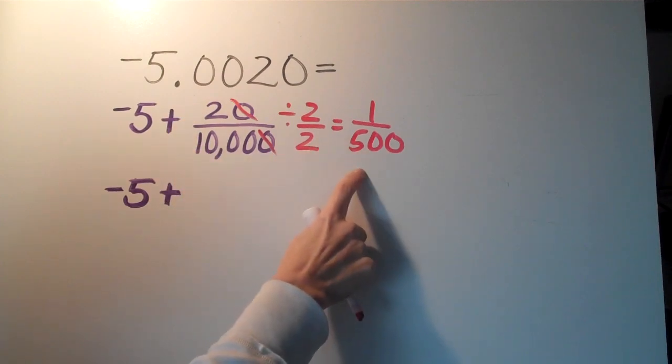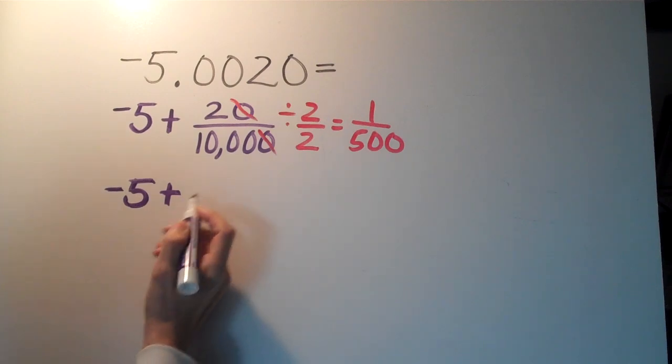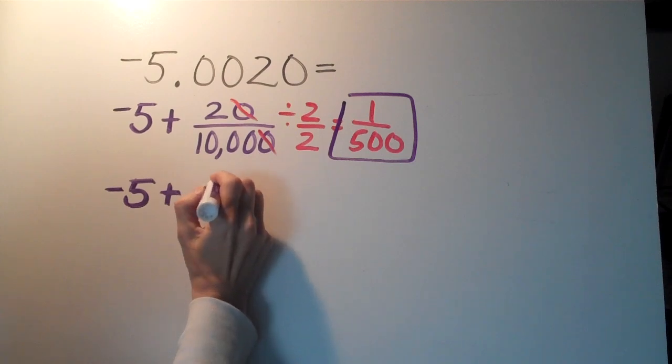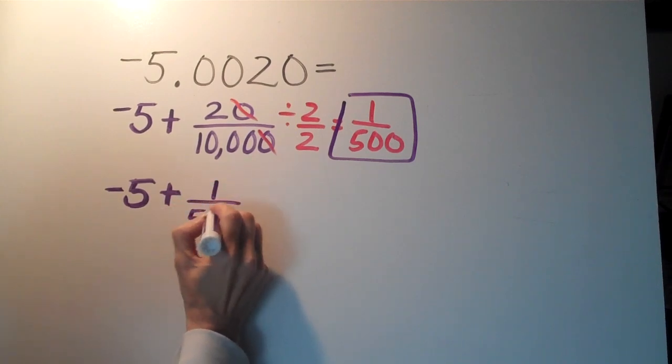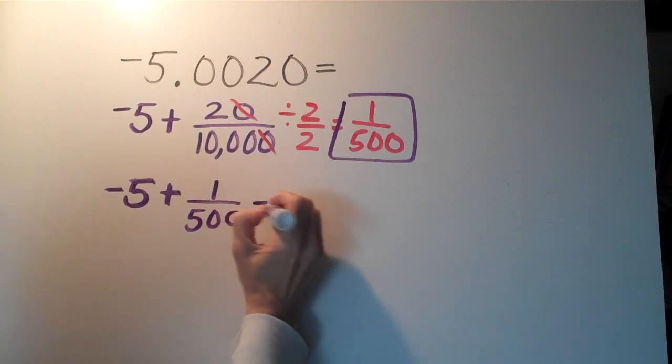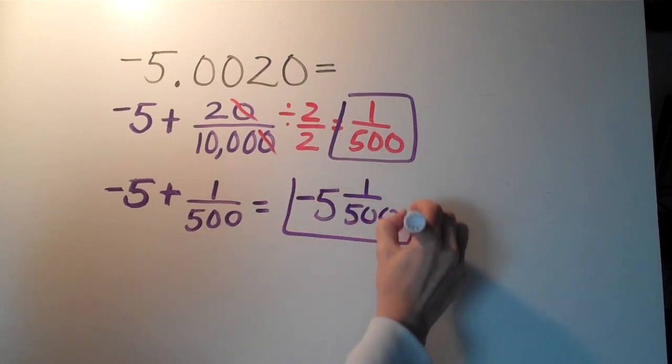So now again I have negative 5 plus, I'm going to take this number right here, this fraction 1 over 500, and my final answer is simply negative 5 and 1 over 500, and that is my fraction.